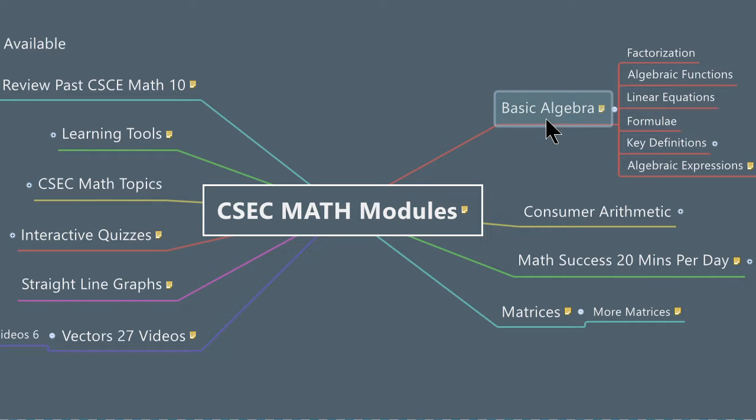For example, basic algebra. And the subtopics, say for example, factorization, algebraic functions, linear equations, formulae, key definitions, algebraic expressions. Now, these topics are not arranged in any specific order, but they identify the key elements that you as a student need to know and master.